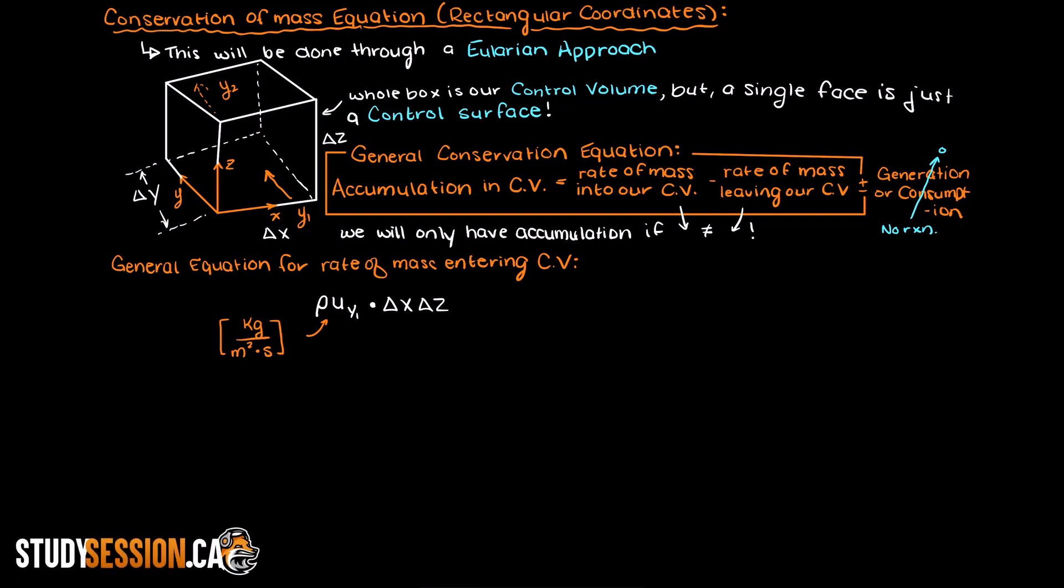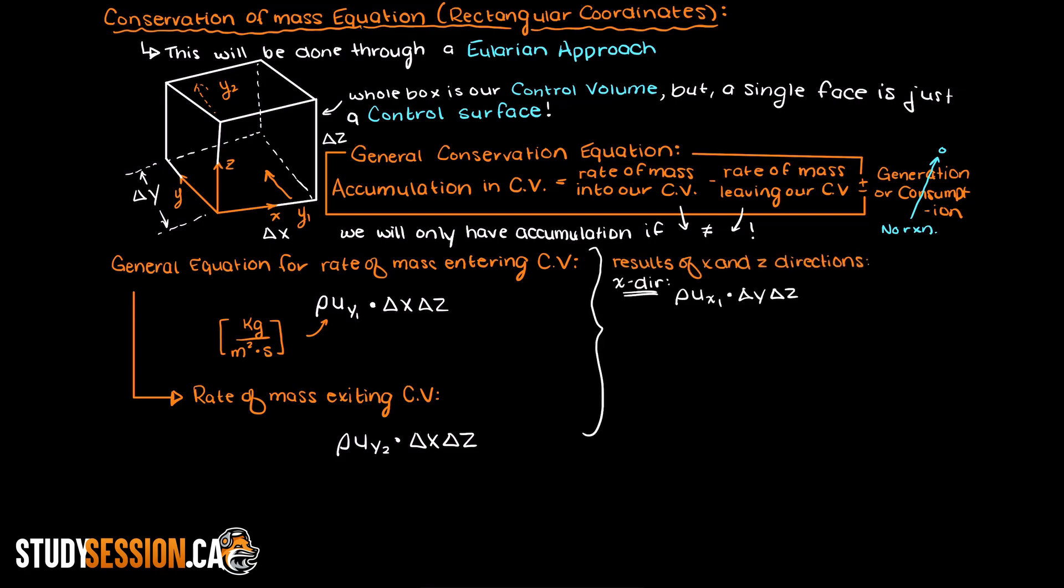Similarly, the rate of mass out in our y direction is going to be the following, which is the same except the velocity is identified at the outlet y control surface. So that was the balance of mass and only in our y direction, however we can do the exact same thing in both the x and z directions, and I've presented that here for you.